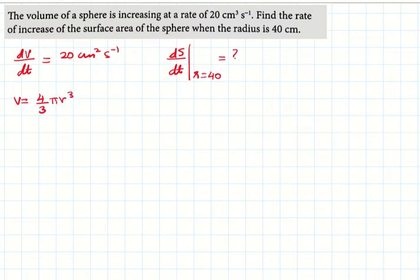You know that volume equals (4/3)πr³. So I will find dV/dr. dV/dr equals (4/3)π times 3r² (the derivative of r³ is 3r²). The 3's cancel out, so 4πr². This is the rate of increase of volume.